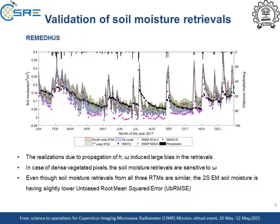A time series of SM retrievals, in-situ SM data, and SMAP and SMOS SM products along with precipitation is shown in this figure. The SM retrievals are validated with respect to the in-situ SM data. The peaks in the retrievals correspond to the precipitation events. The realizations due to the propagation of H and omega induce large bias in the retrievals. In case of dense vegetation pixels, there is some sensitivity due to the change in omega parameter in SM retrievals.